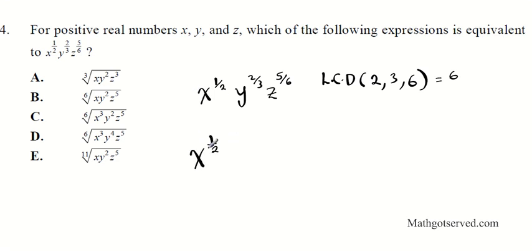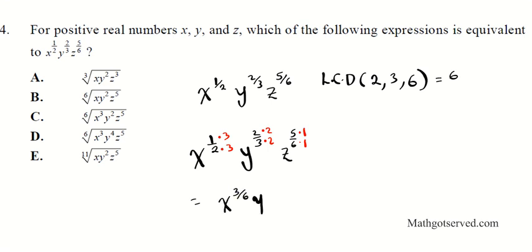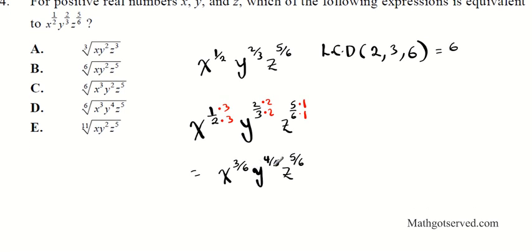For x^(1/2): multiply top and bottom by 3 to get x^(3/6). For y^(2/3): multiply top and bottom by 2 to get y^(4/6). For z^(5/6): it already has denominator 6, so it stays z^(5/6). Now all denominators are identical. Using properties of exponents, we factor out the 1/6: this becomes (x³ · y⁴ · z⁵)^(1/6).